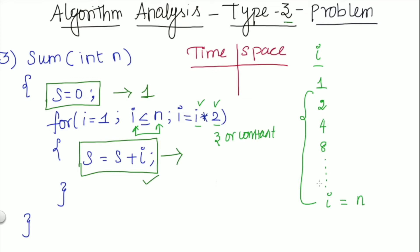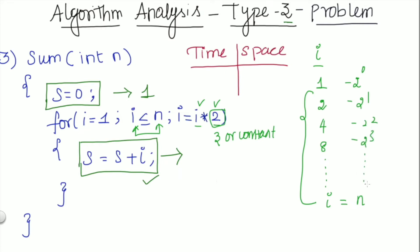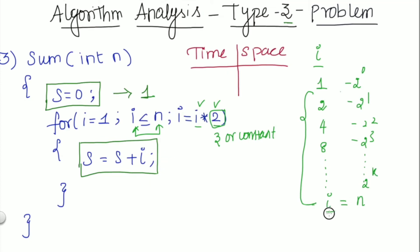Now, what happens when the loop variable is multiplied by 3 or some other constant? Obviously the pattern changes, and that's why you have to write these I values in terms of the constant value 2. So the values will be 2 power 0, 2 power 1, 2 power 2, 2 power 3, and so on up to 2 power k.